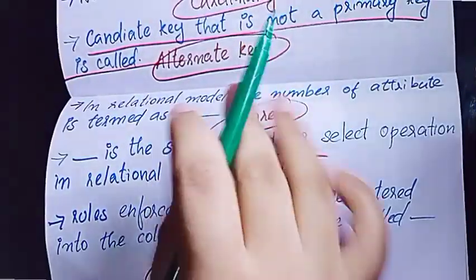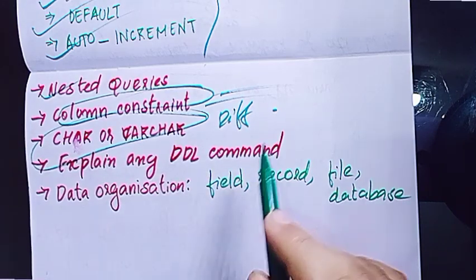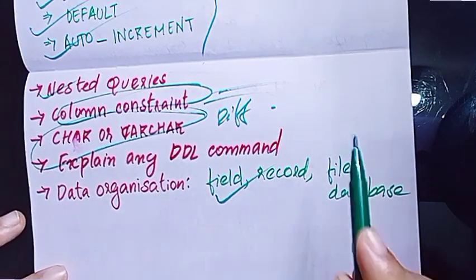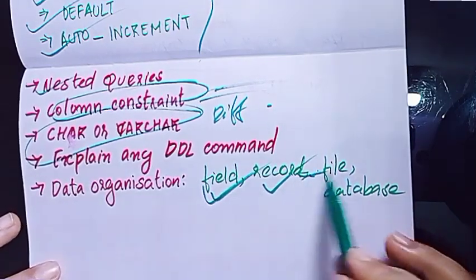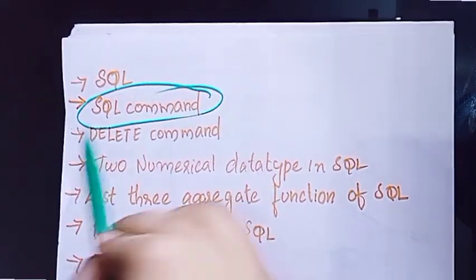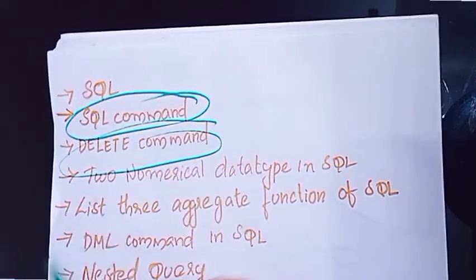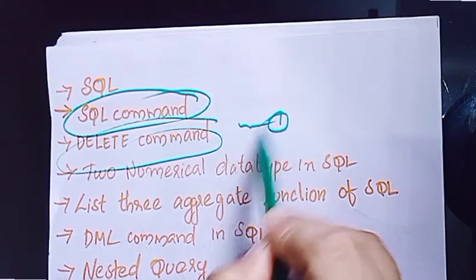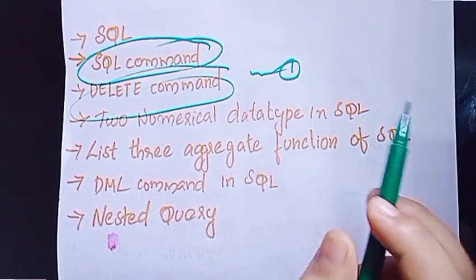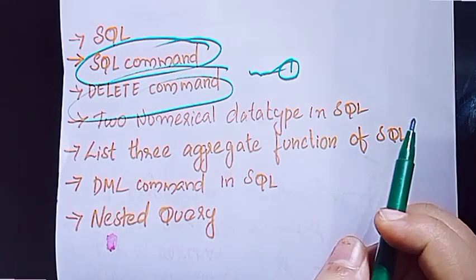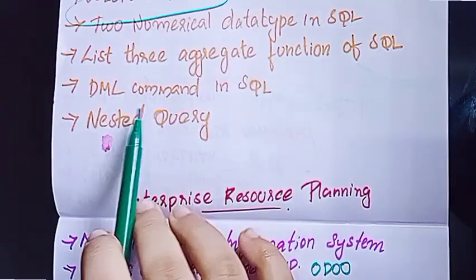I have separate data types. Here is the explanation: data organizations — field, record, file, database. SQL commands include the Delete command. Two numerical data types in SQL. It also covers aggregate functions and DML commands.